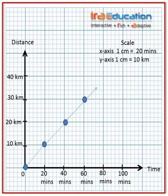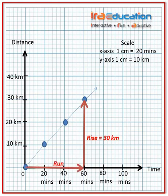After plotting the graph, the teacher shows Rakesh and Mohan how to calculate the speed of the bus using the distance-time graph. First, they find the rise of the graph, which is the vertical distance on the y-axis — the rise is 30 kilometers. Next, they find the run of the graph, which is the horizontal distance from the origin to the 60-minute mark — the run is 60 minutes. Speed is found by taking rise over run.